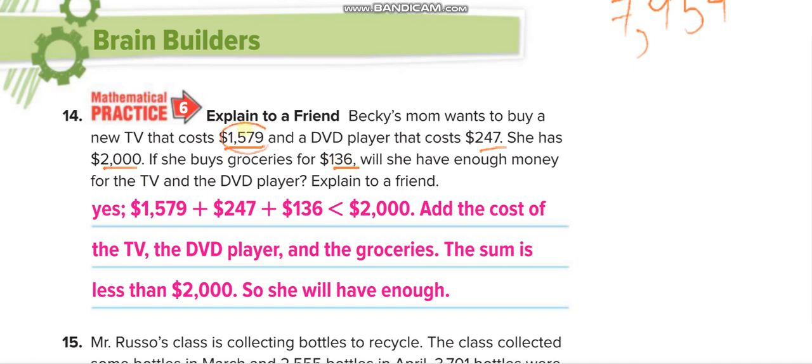If it's more, she can't buy. If it's less than $2,000, she can buy. How will you add three numbers? Write them in a line. The first one, $1,579. The second number, $247. 2 is hundreds, so write it under the hundreds. And the next one is $136. Add it now. 9 plus 7 is 16, 16 plus 6 is 22.